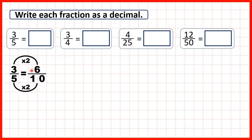So now that we know that three-fifths is equivalent to six-tenths, which means it's the same size as six-tenths, we can write it as a decimal. Because the first digit after the decimal point is the tenths digit, we can write that as zero point six.